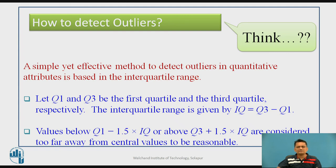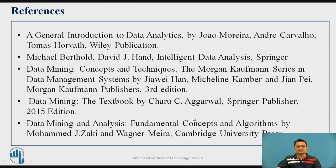These are the five important data quality problems discussed as part of pre-processing: you should deal with missing values, redundant data, inconsistent values, noisy data, and outlier values. Addressing these problems before feeding data to any machine learning algorithm is essential for ensuring reliable analysis. Thank you.